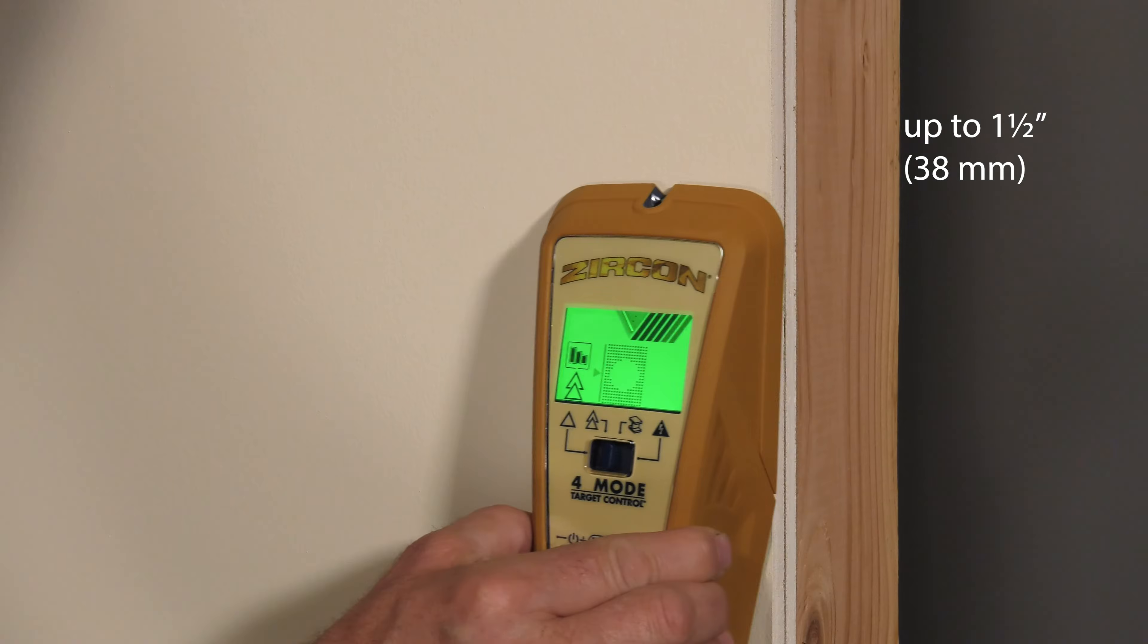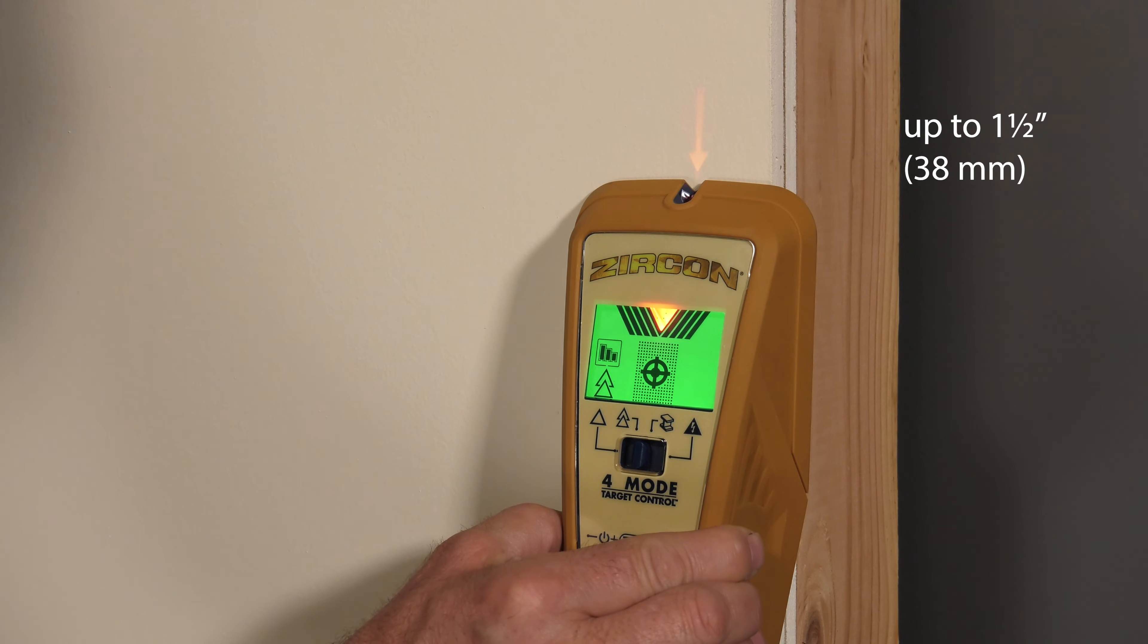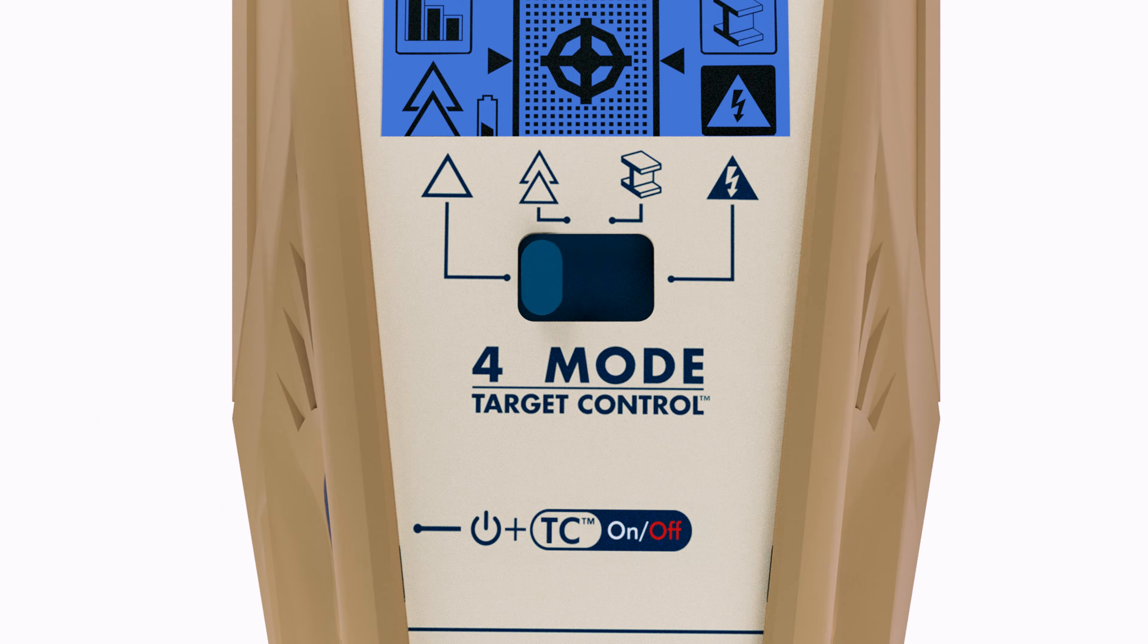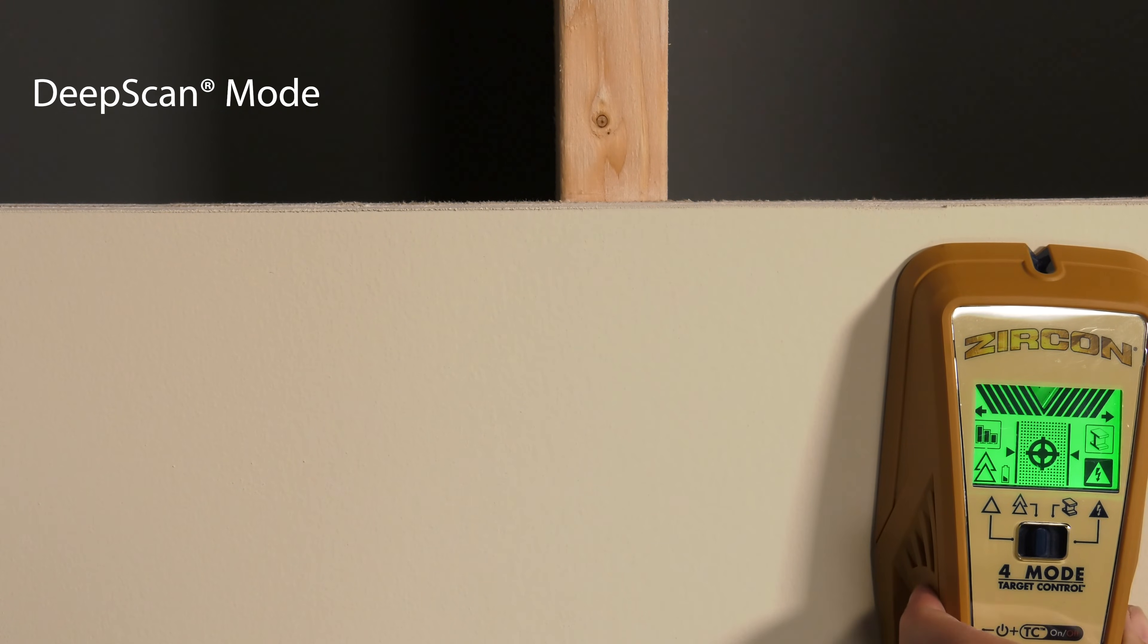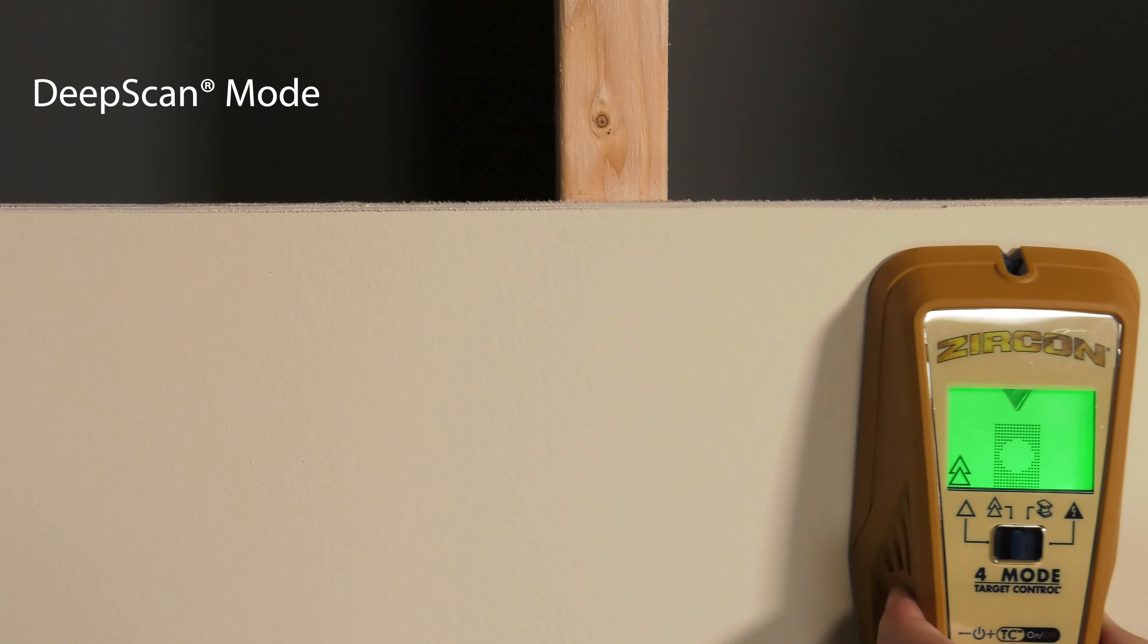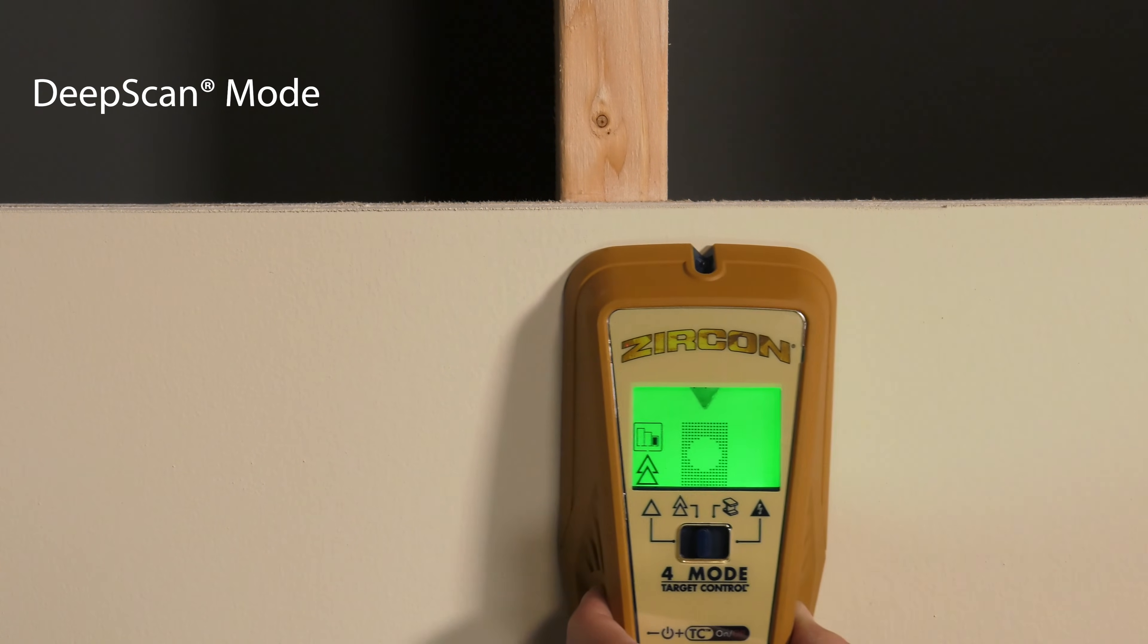To find wood and metal studs through surfaces thicker than three-quarters of an inch, switch the mode selector to the second left position, deep scan mode. Place the tool on the wall, press and hold the power button. The backlight will illuminate green. Begin your scan.